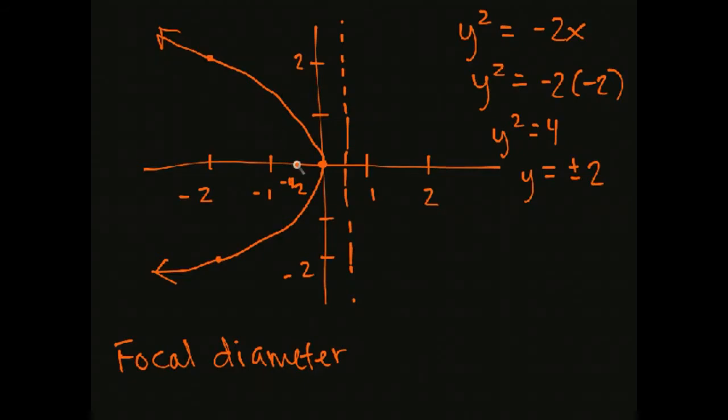When we go its width right at the focus, how wide is it? Because if we have that that kind of gives us an understanding of how far up do I need to go, how big is this. Instead of plotting this other point we could know the focal diameter. Well the focal diameter is going to be the absolute value of 4p.